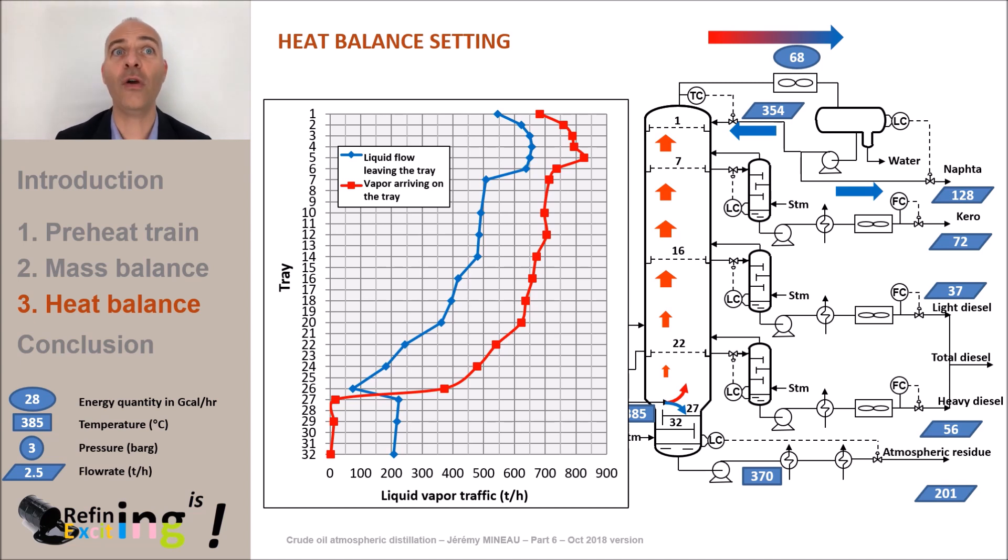Then, we see the flow of liquid decreasing as we go down in the column, since we will extract 72 tons per hour of kerosene at tray 7. Then, 37 tons per hour of light diesel at tray 16. And finally, 56 tons per hour of heavy diesel on the tray 22. Let's see how this traffic is impacted as we extract calories from the column thanks to the pump around.